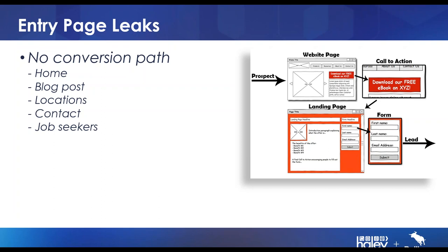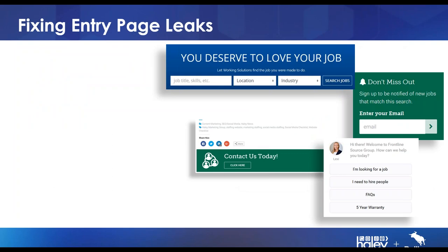Have you thought through the conversion path on all of your entry pages? What actions are you trying to drive from a blog post versus a locations page? If someone's on a job seekers page, the clear intent is to find work. On a blog post it could be an employer or job seeker, so you might have different conversion paths. When someone's consuming blog content their interest level is more about related content, whereas on a job seeker or contact page, the conversion path is taking action: search jobs, apply now, contact us, call us.